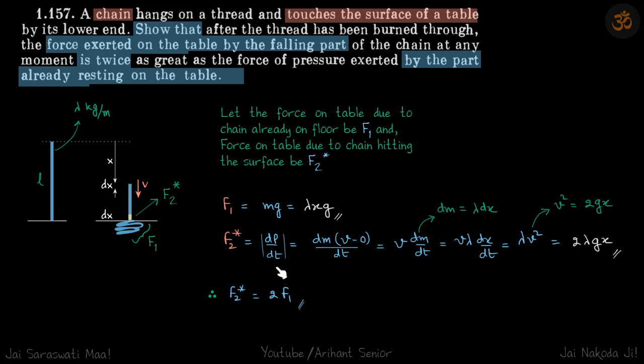Now f2 star, that is dp by dt. As discussed, the change in momentum is because of this part, because this part is the one that is in contact with the surface. So dp by dt of this small part we can write as dm into v minus 0 by dt. So its velocity was v and then it came to rest, so the small momentum change for that particle is dm into v minus 0 by dt.